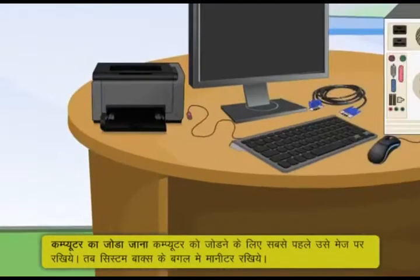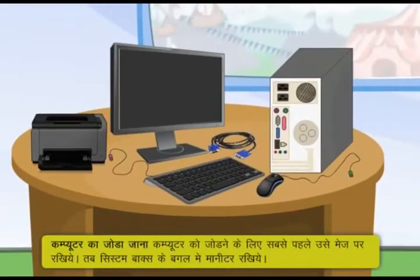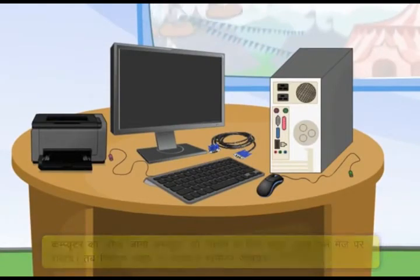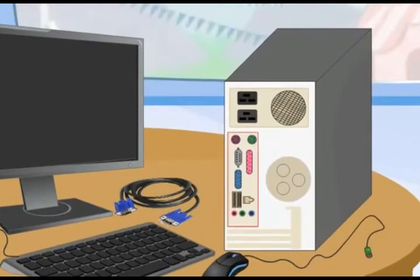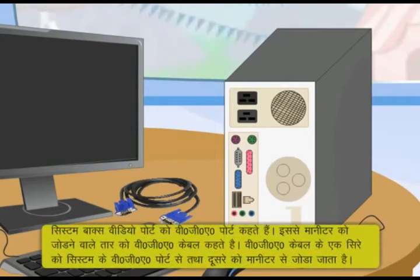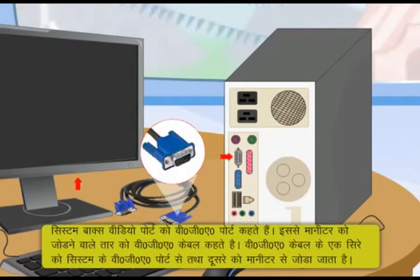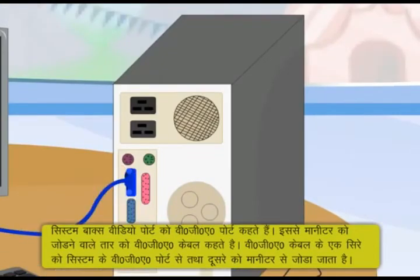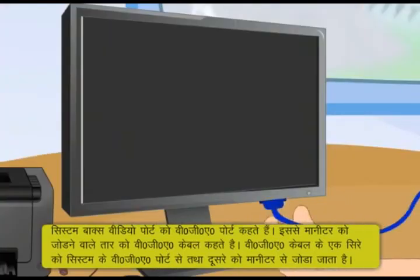To set up the computer, first place it properly. The system box has ports at the back used to connect devices. The system box has a video port called the VGA port. The monitor connects to this using a VGA cable, which is plugged into the VGA port on both ends.